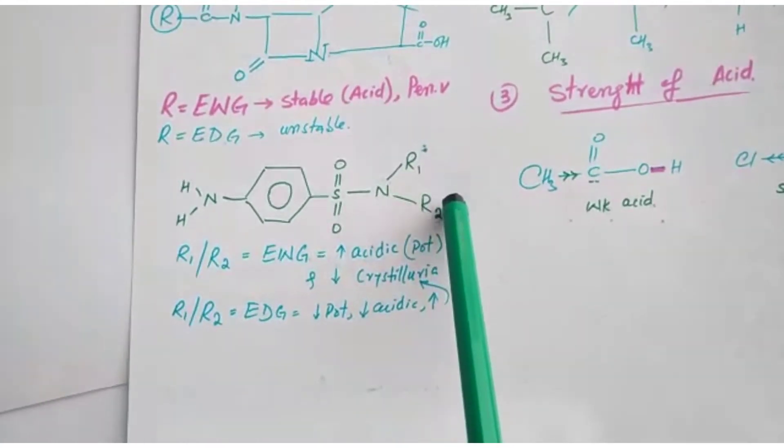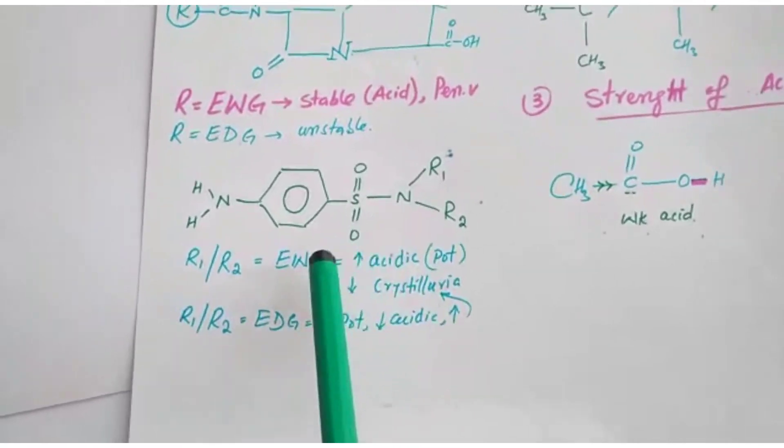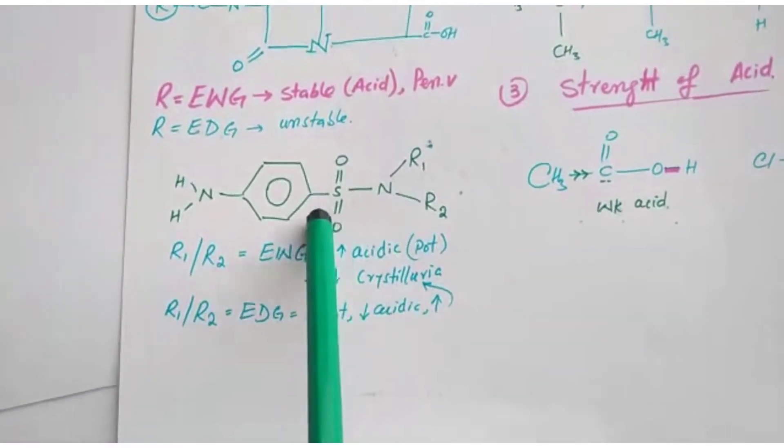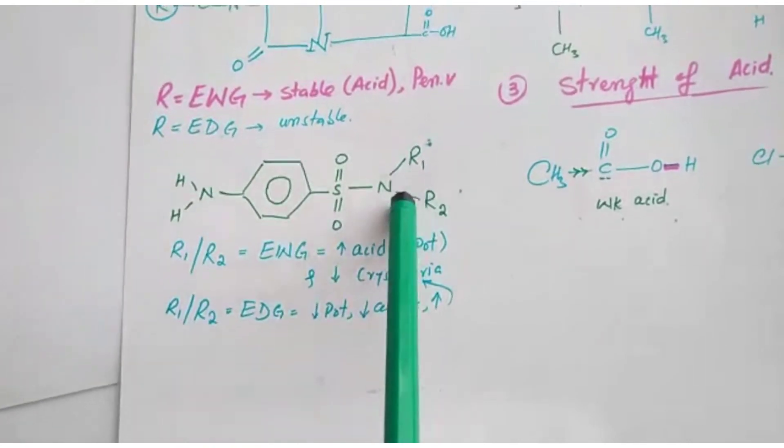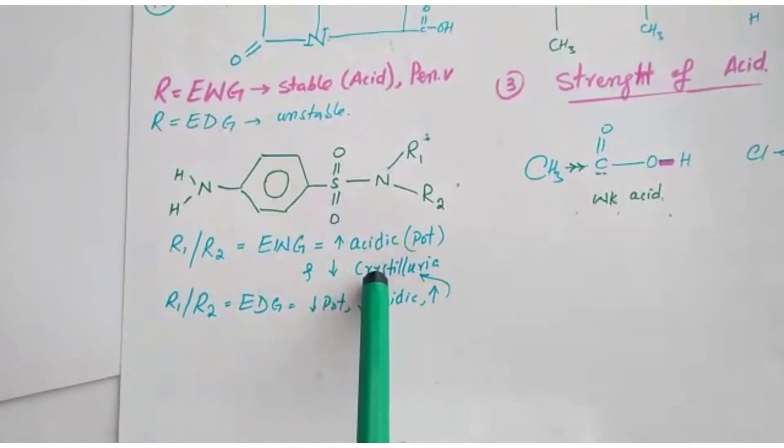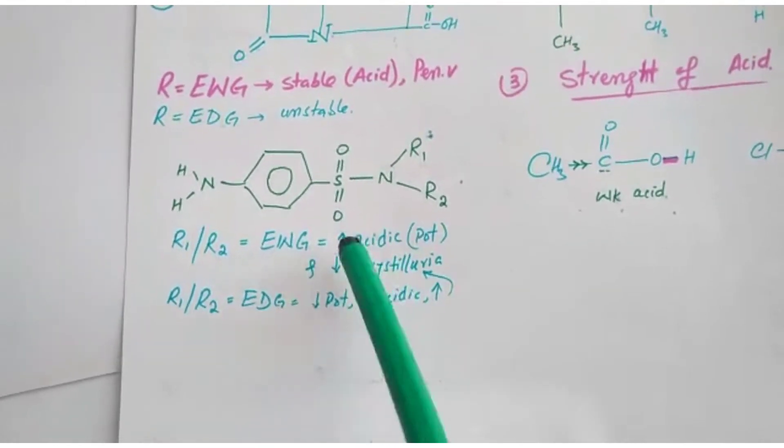If R1 or R2 or both are electron withdrawing groups, this molecule will be more acidic and this drug will be more potent, and there will be less chance of crystalluria because urine is slightly acidic.